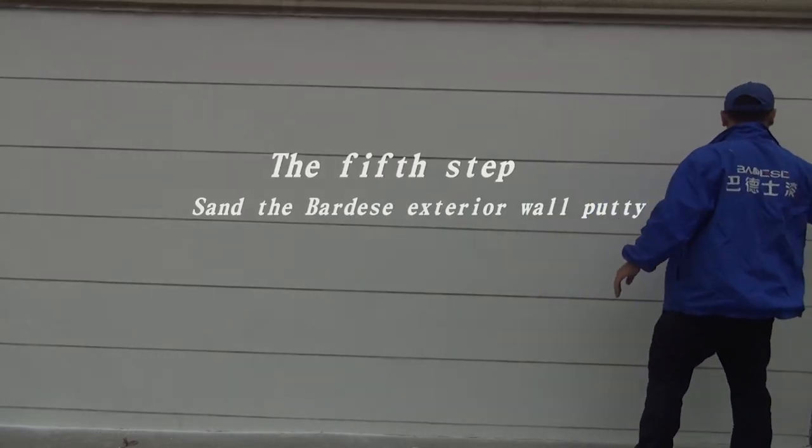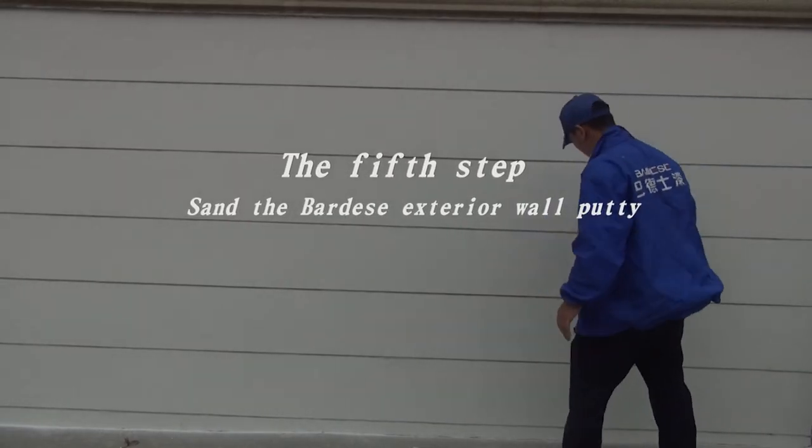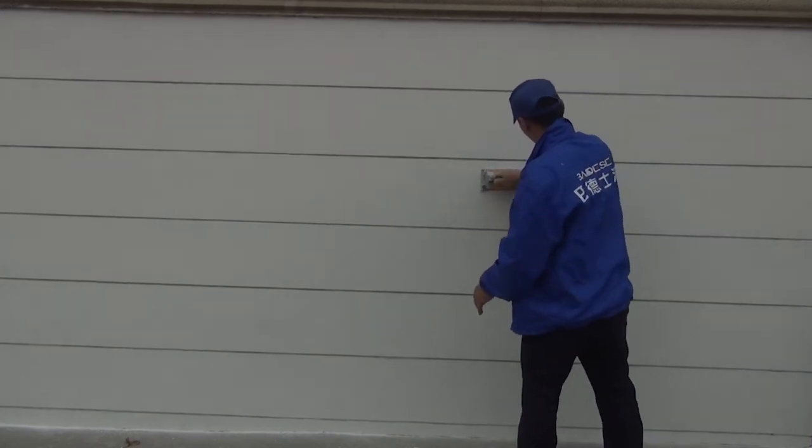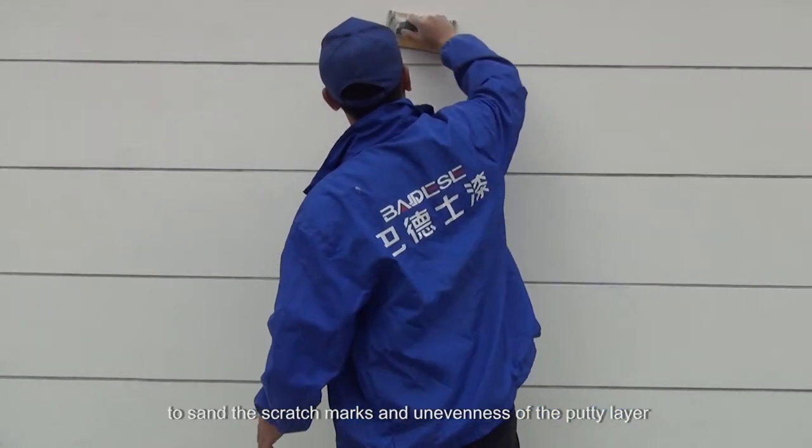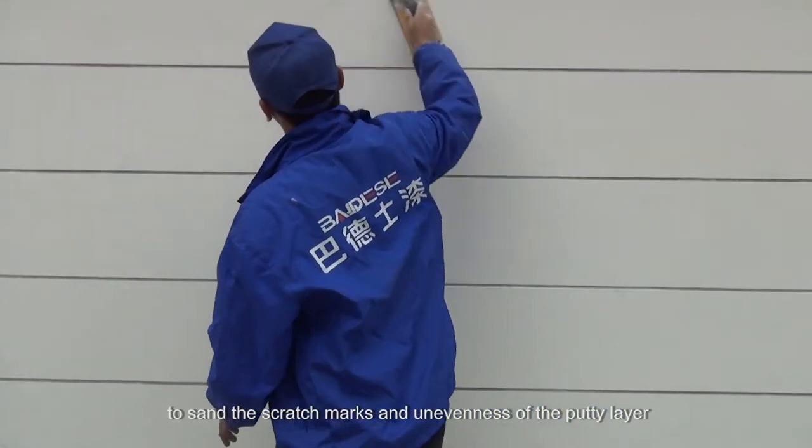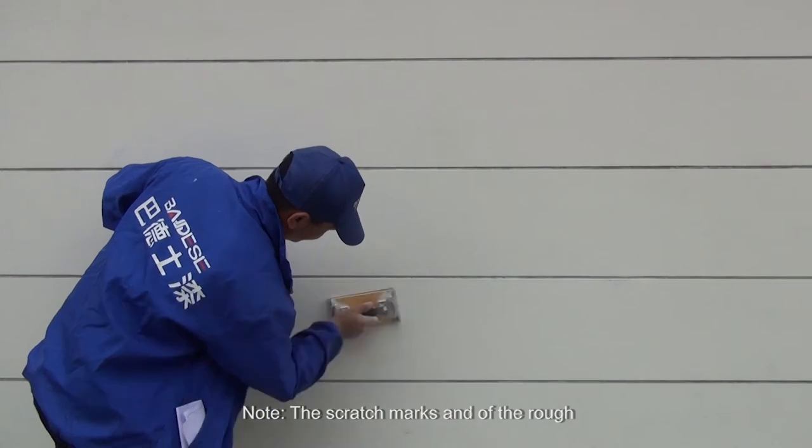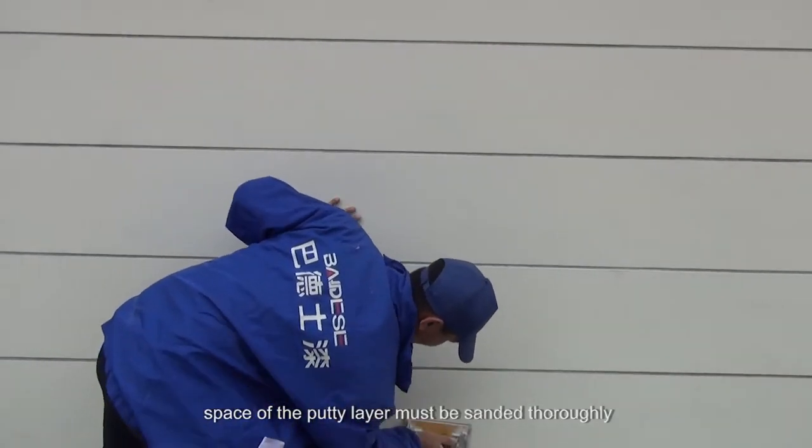The fifth step: sand the Bardese exterior wall putty. Choose a proper sanding method and tools to sand the scratch marks and unevenness of the putty layer. Note: the scratch marks and rough surface of the putty layer must be sanded thoroughly.